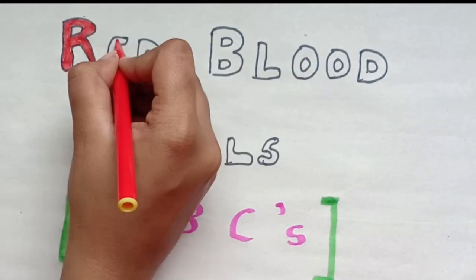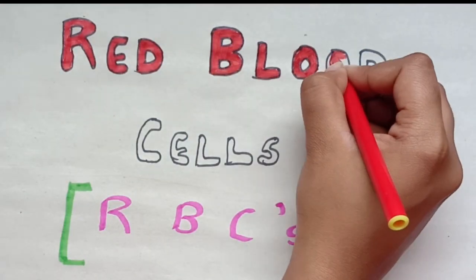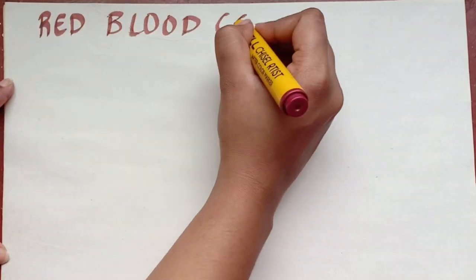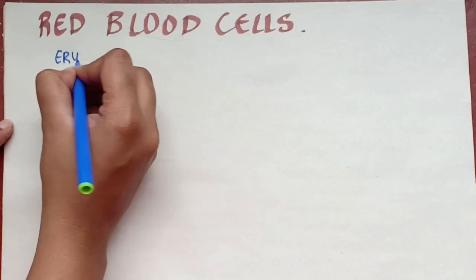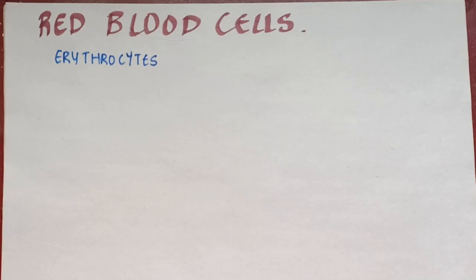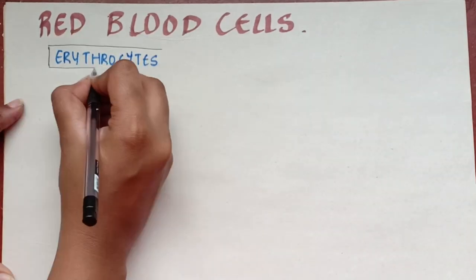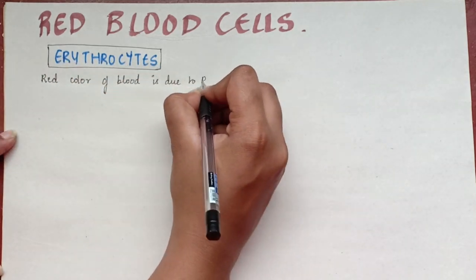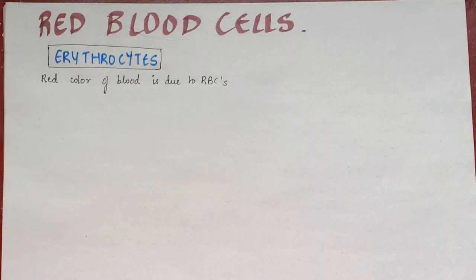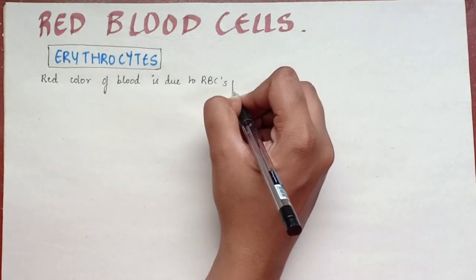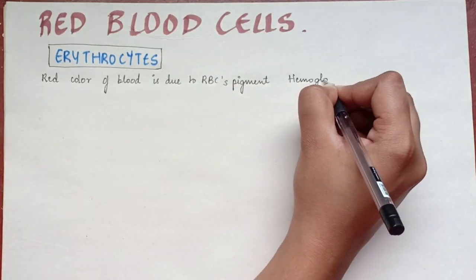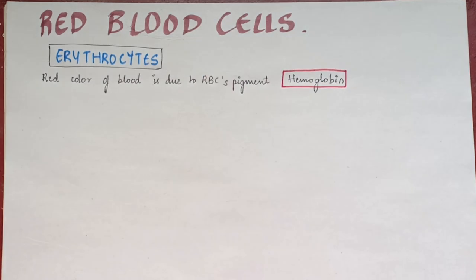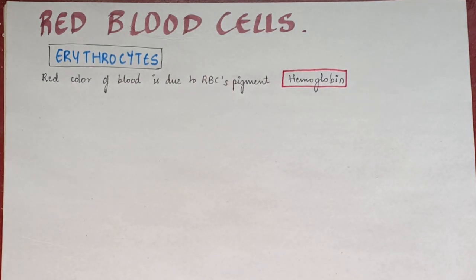Red blood cells are also known as erythrocytes, where 'erythro' means red. The red colour of the red blood cells is due to the presence of the colouring pigment called hemoglobin.